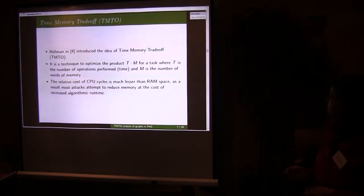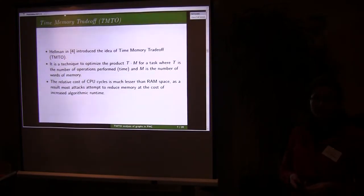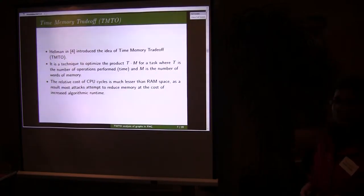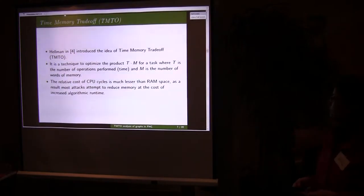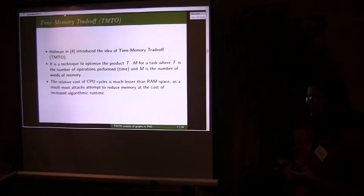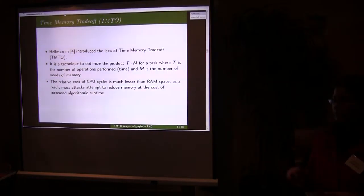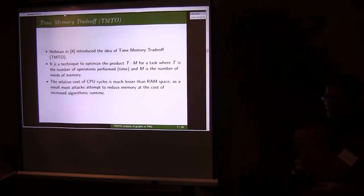The term time-memory trade-off is defined by Hellman as the product of time and memory, where time is the number of operations required for the algorithm and memory is the required memory. This is very much important because we know in terms of cost, CPU cycles is much lesser than the RAM space. So every time adversary tries to get the output with implementing with less memory in place of the actual memory required for the algorithm.